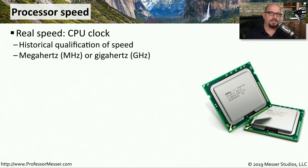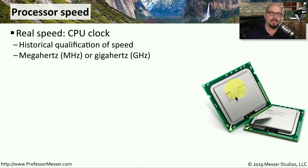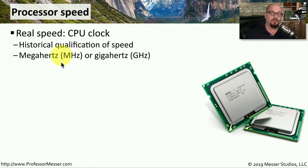If you look at the specifications of a CPU, there's always going to be a processor speed value listed. For example, this CPU has a processor speed of 3.80 gigahertz. This refers to the total number of transactions that can occur in a single second. Older CPUs were rated in megahertz — millions of transactions per second — but modern CPUs are often rated in gigahertz, meaning billions of transactions per second.